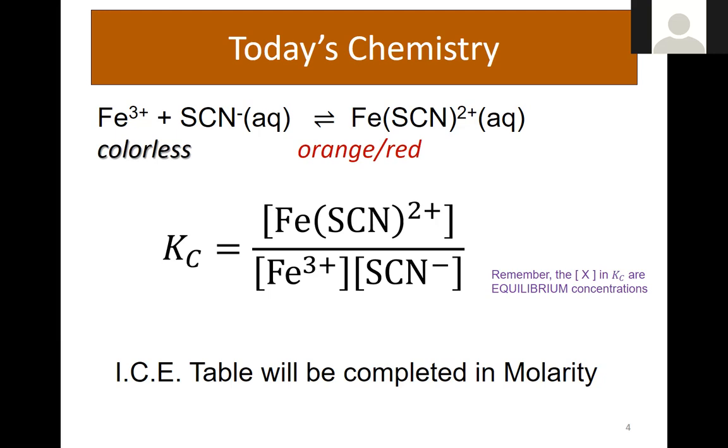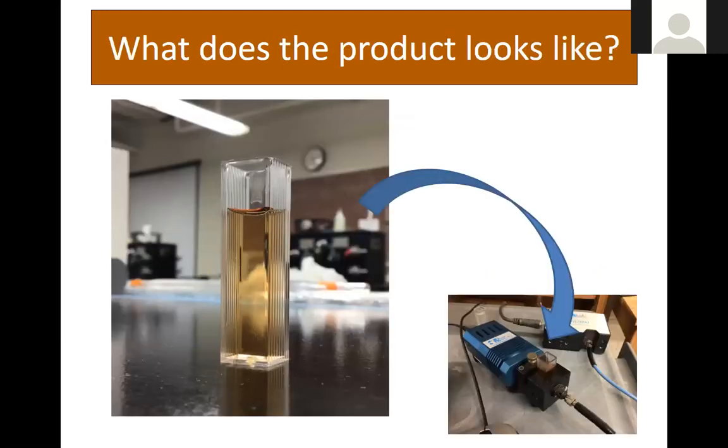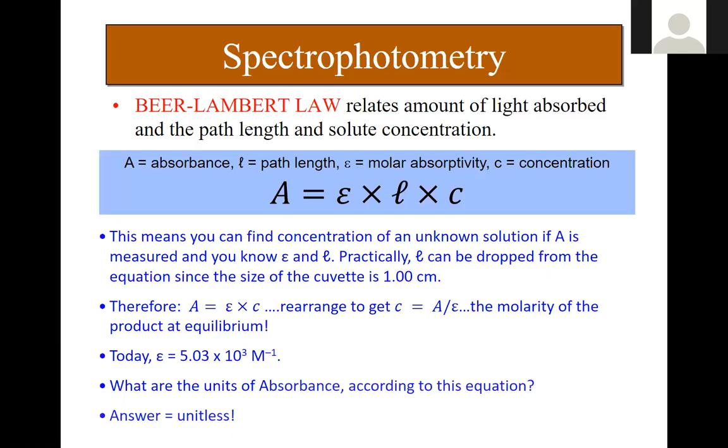This is what the product will look like after you mix some of the iron and thiocyanate. You'll see a nice little orange-red color. You'll do it in a test tube and then transfer it to a cuvette. The cuvette will go into a spectrometer. You can measure the absorbance. The absorbance will then connect over to the concentration of the product that we're looking for.